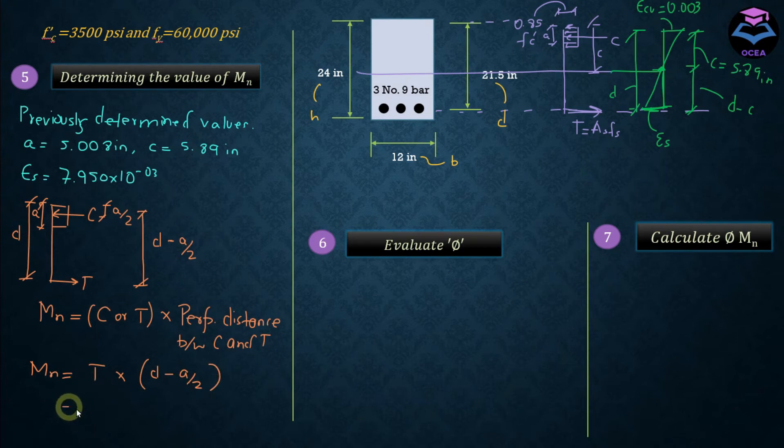And MN in this case would be the magnitude of T multiplied by the perpendicular distance between these two forces. So MN is equal to T times D minus a by two, and T we know is equal to As into Fy.